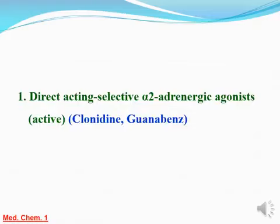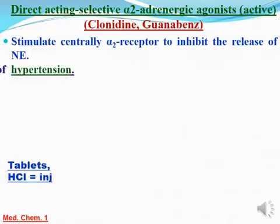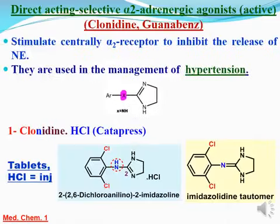الـ direct acting selective alpha-2 adrenergic receptor agonists قلنا بتكون active ومنها الـ clonidine والـ guanabenz. سنيجي نشوف الـ structure بتاعها بيكون عبارة عن إيه. طبعا في بداية الحديث عن الـ adrenergic drugs وتعريف الـ receptors، عرفنا إن الـ selective alpha-2 adrenergic agonists دي بتقلل الـ release of norepinephrine والـ principal use بتاعها إنها بتعالج الـ hypertension.